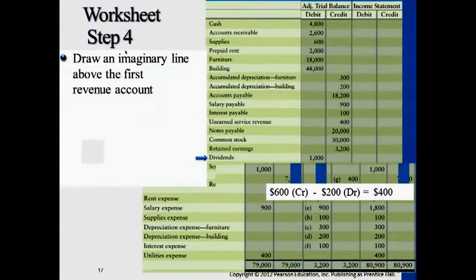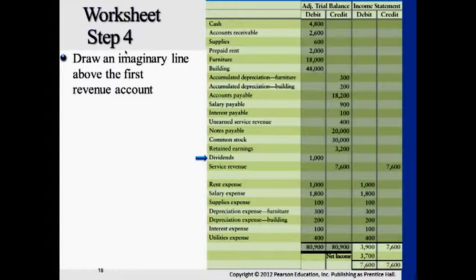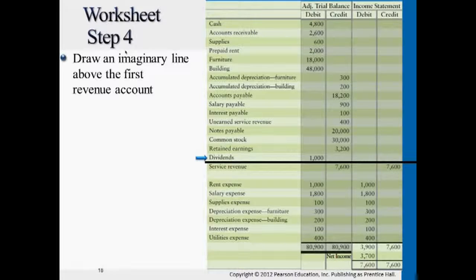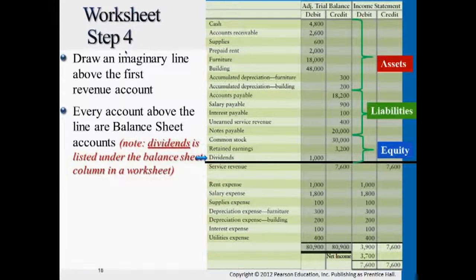Adding the income statement column — just by its name, this column represents only income statement accounts. You can probably already guess what falls under that column: only revenues and expenses. When you look at an adjusted trial balance, you can draw an imaginary line. All accounts that fall below this line go into the income statement column — it's exactly the same, just copying those figures. This column is like a draft of the income statement. Accounts above the line — those that are not income statement categories — will fall into the balance sheet category: asset accounts, liability accounts, and stockholders' equity accounts.